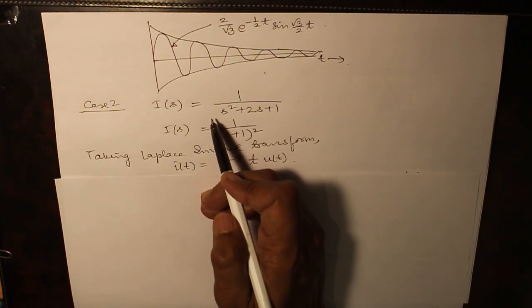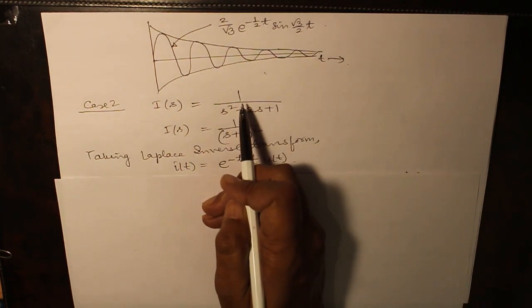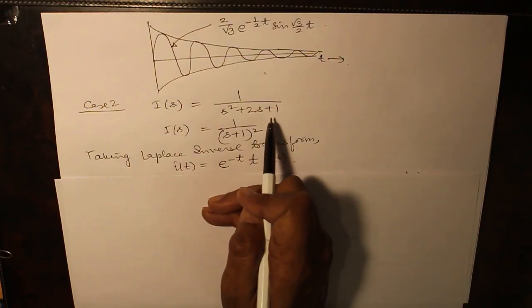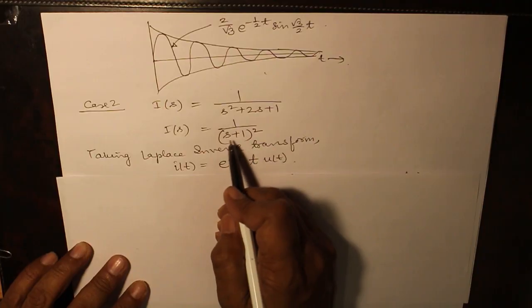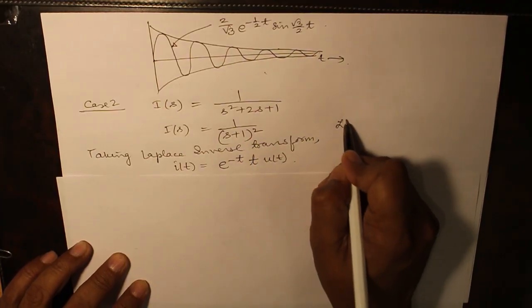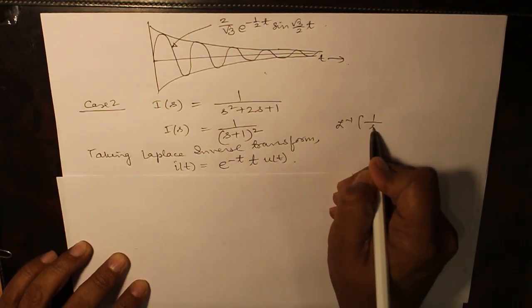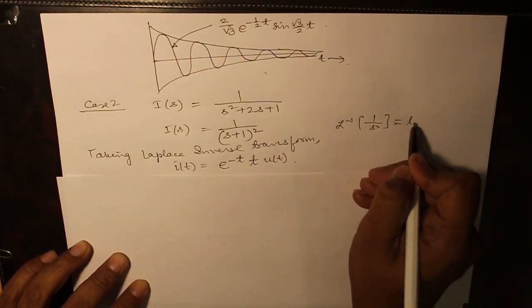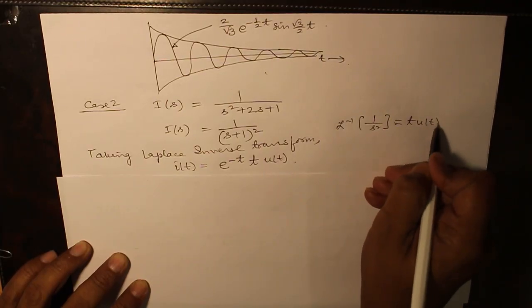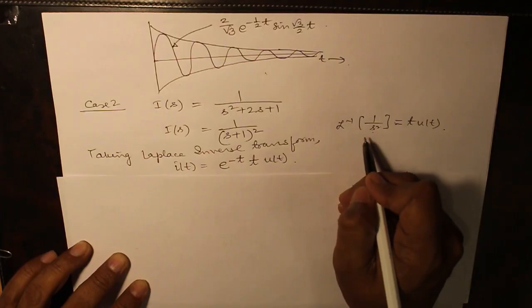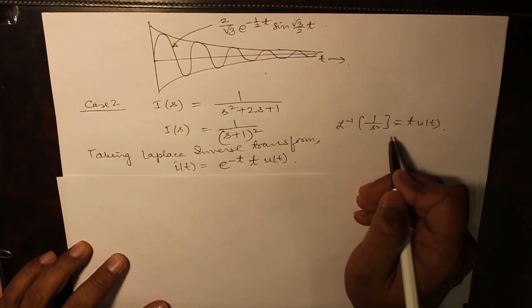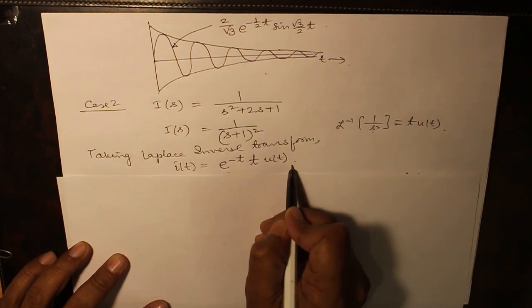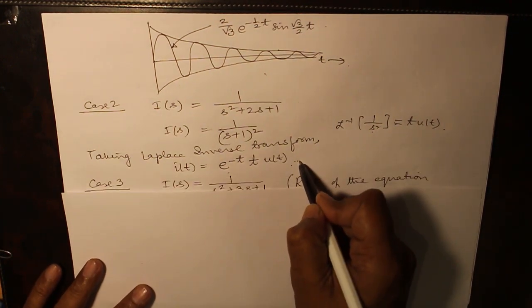Second case is when both the roots are equal and I(s) equals 1 over s² plus 2s plus 1. The roots are at s equals minus 1 so I(s) becomes 1 over (s + 1)² and we know Laplace inverse of 1 over s² is t*u(t). So, if s is replaced by s plus 1 by frequency shifting formula it becomes e raised to the power minus t into t*u(t). This is the answer for case 2.